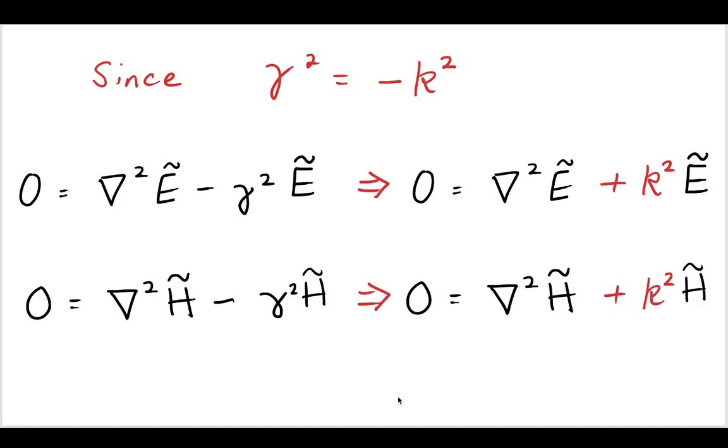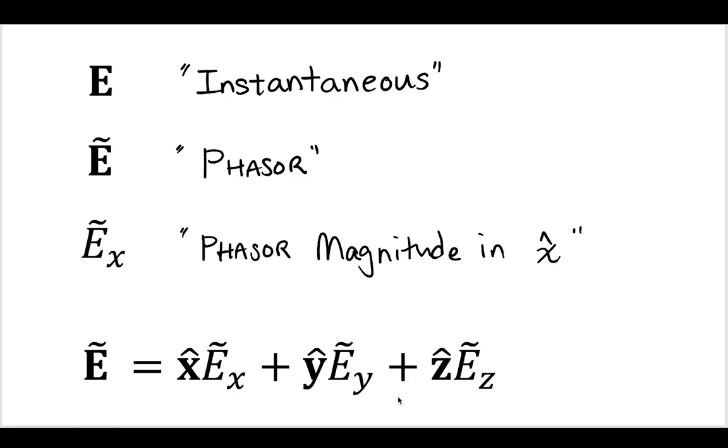Now, a couple more things to note before we continue on is some notation issues. So we have this, where we have a bold capital E indicating that this is an instantaneous field. We are using the bold capital E with the tilde on top to indicate that we have converted to the phasor domain.